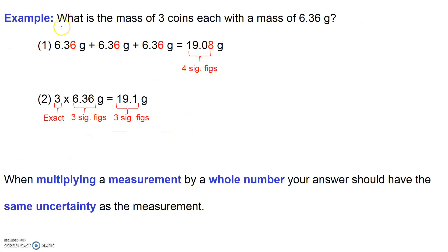Here's an example showing what can go wrong when we take the wrong approach. The question asks, what is the mass of three coins, that's our small exact number, each with a mass of 6.36 grams? If I consider this an addition problem where I add 6.36 to itself twice, then I would say, well, this is addition,